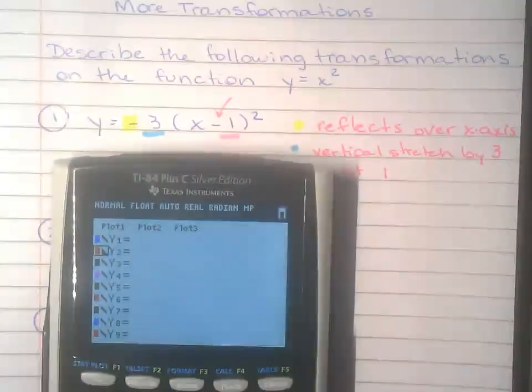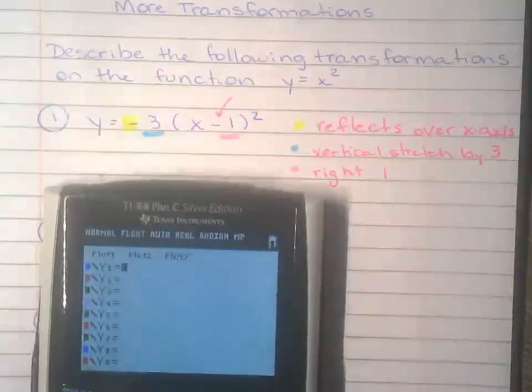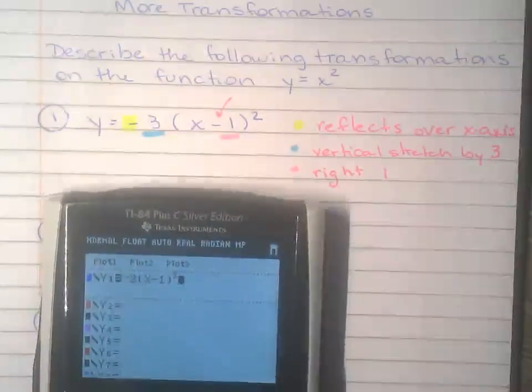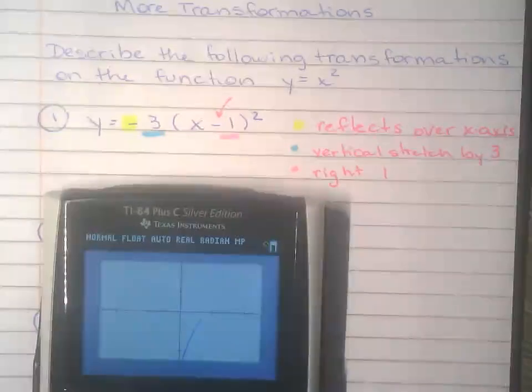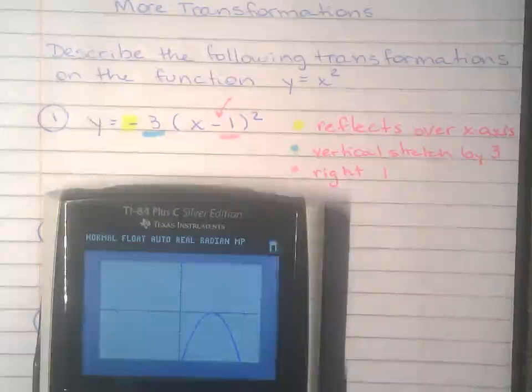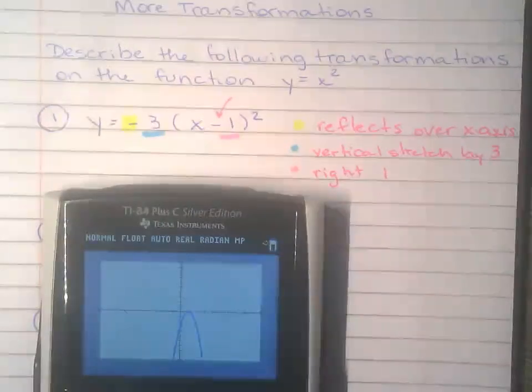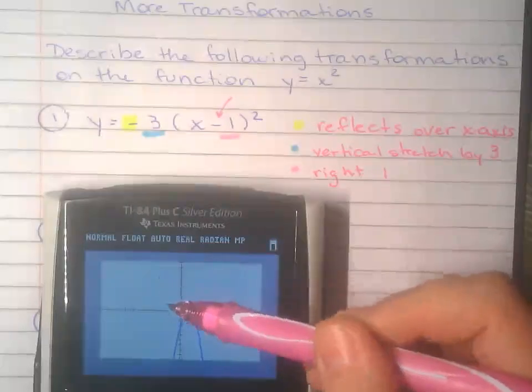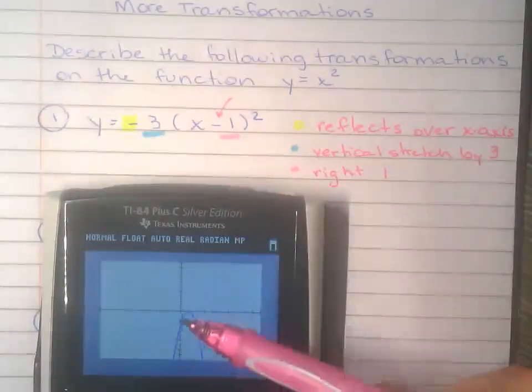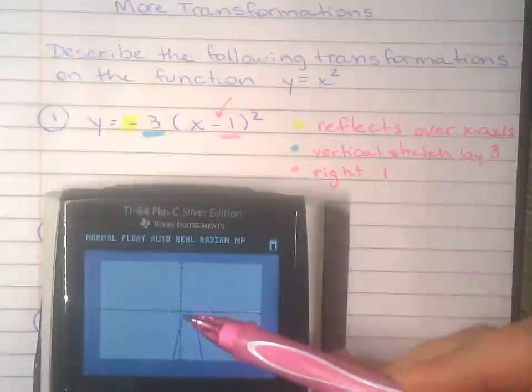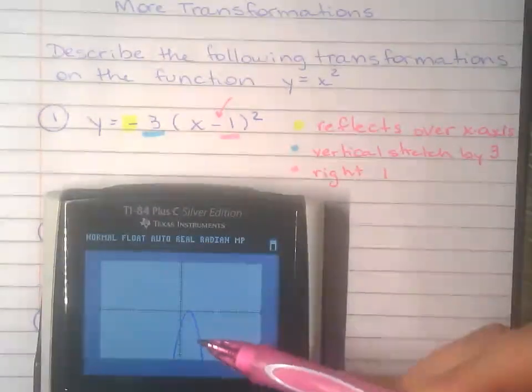Go to y equals. I'm going to have to fix this. Hang on. And you can choose to do the parent function on there or not. I'm just going to fix the window here. So you were expecting the parent function to be just a smiley face going through the origin right there. So reflection over the x-axis. You can see that the parabola is right there reflected over the x-axis. You can see the vertex went right one unit right there.